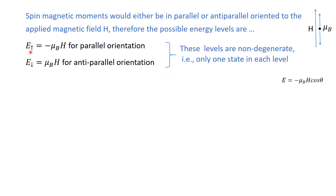These two energy levels are non-degenerate — that is, only one energy state exists for each. The degeneracy is associated with the angle θ. For the parallel orientation there is only one possible angle, which is zero, and similarly for the anti-parallel orientation there is only one possible angle. That is why these energy levels are non-degenerate, giving us only two energy levels in this system.